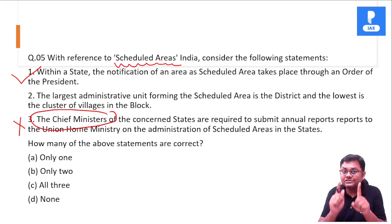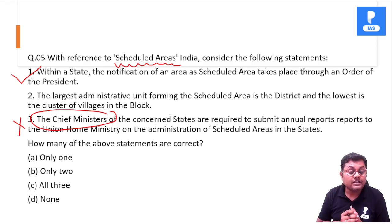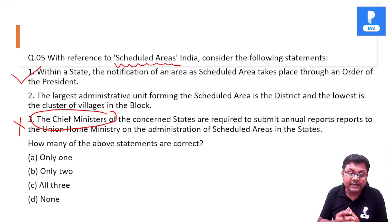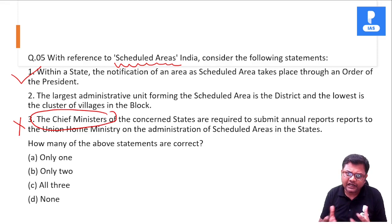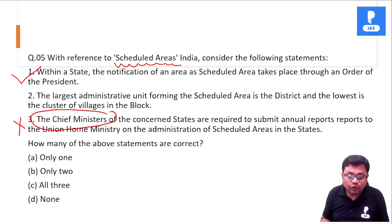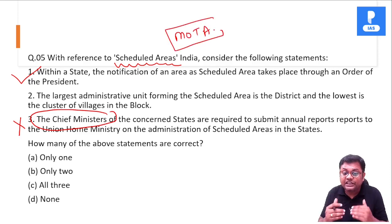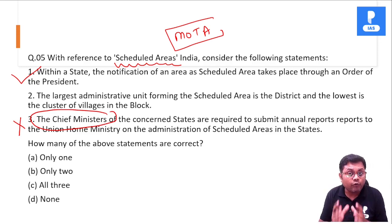The second statement is that the largest administrative unit forming the Schedule Area is the district, and the lowest is a cluster of villages in the block. This information you will not find in the Constitution, nor on the Ministry of Tribal Affairs website — and these are the criteria we discussed in our foundation course class.